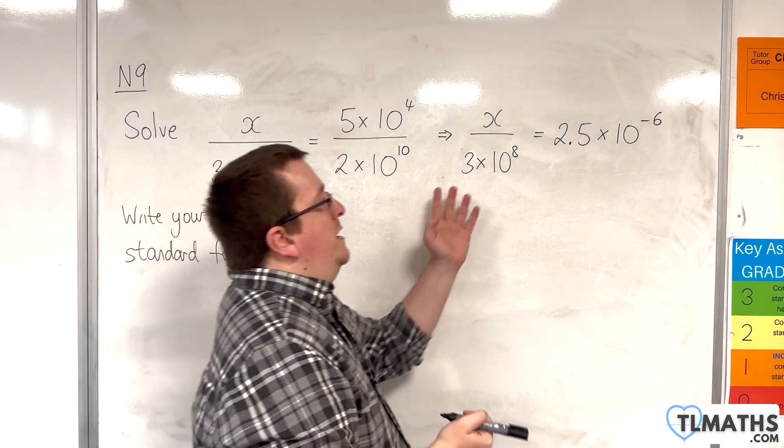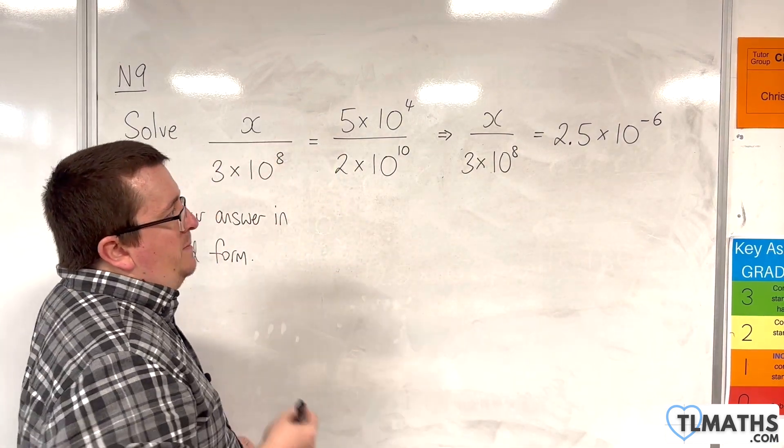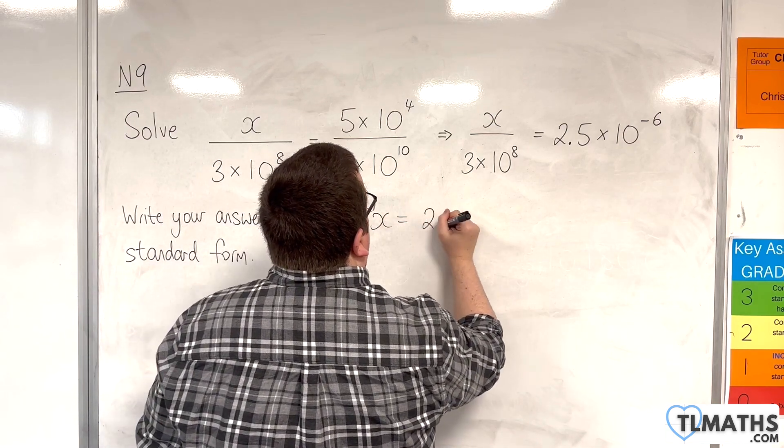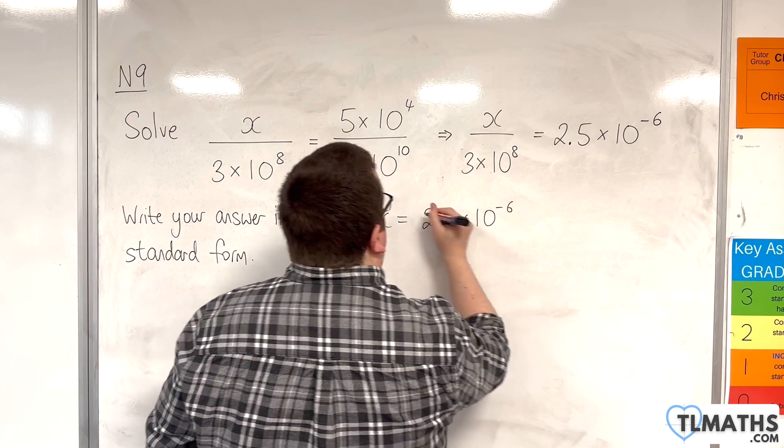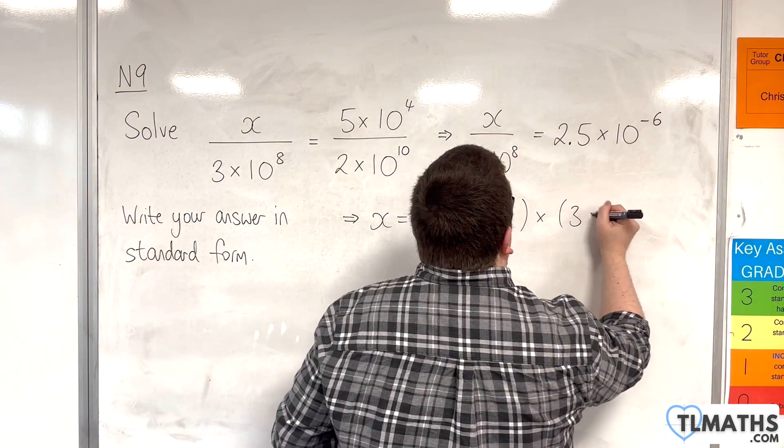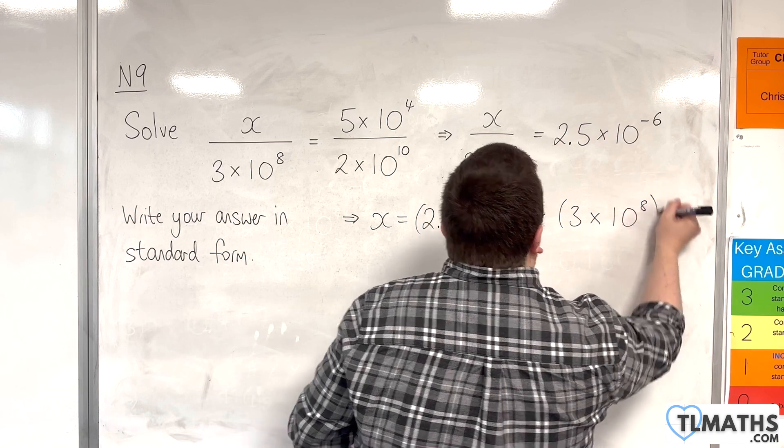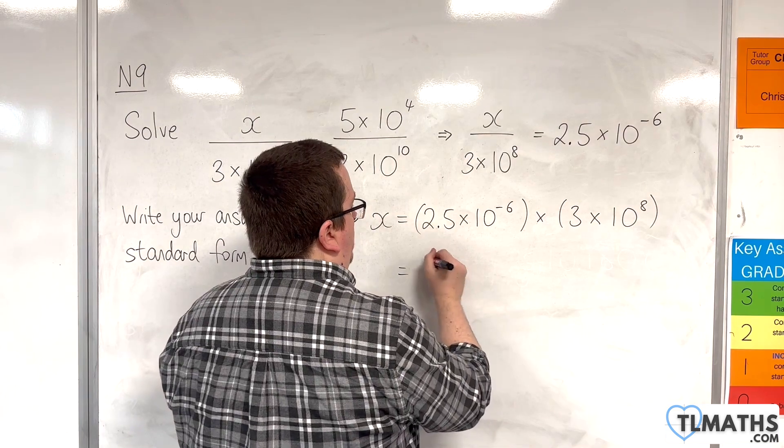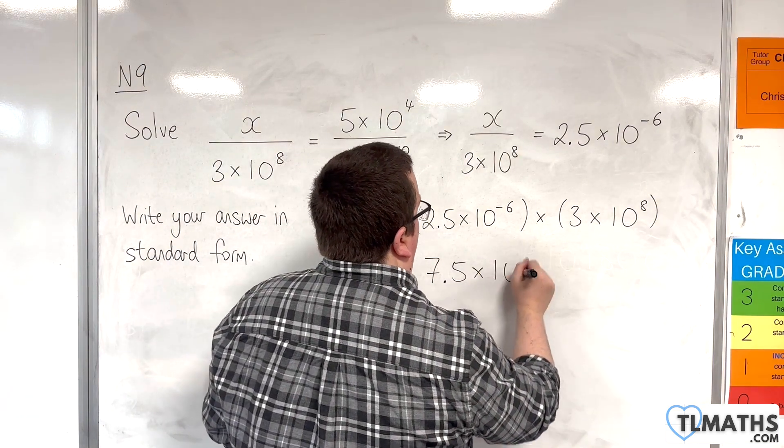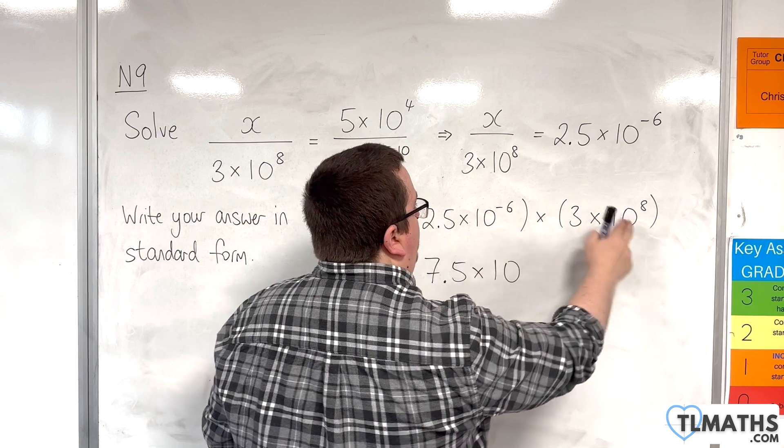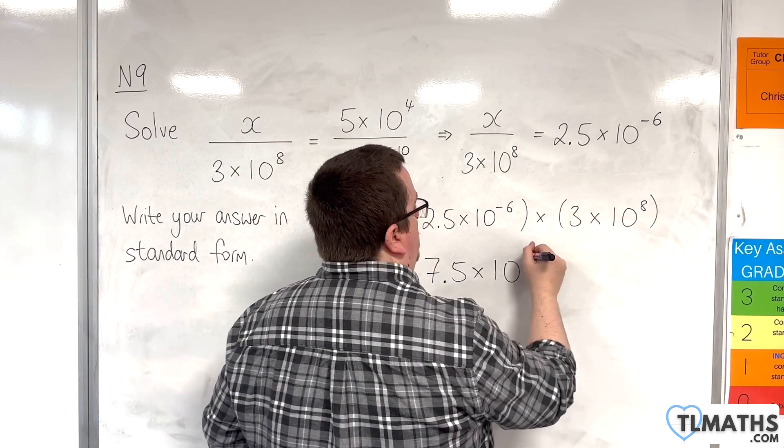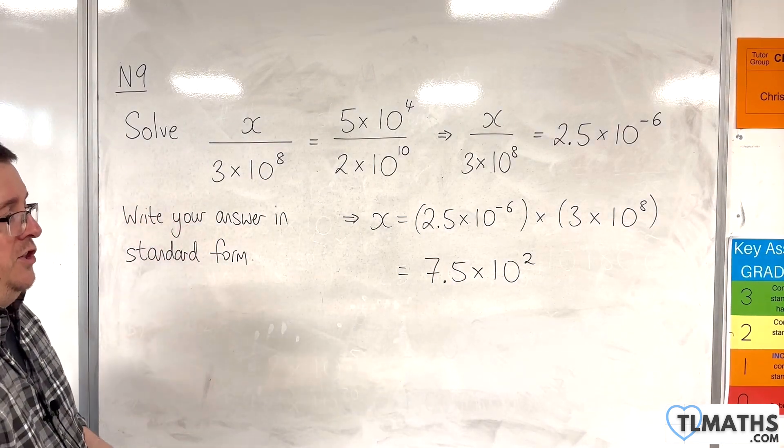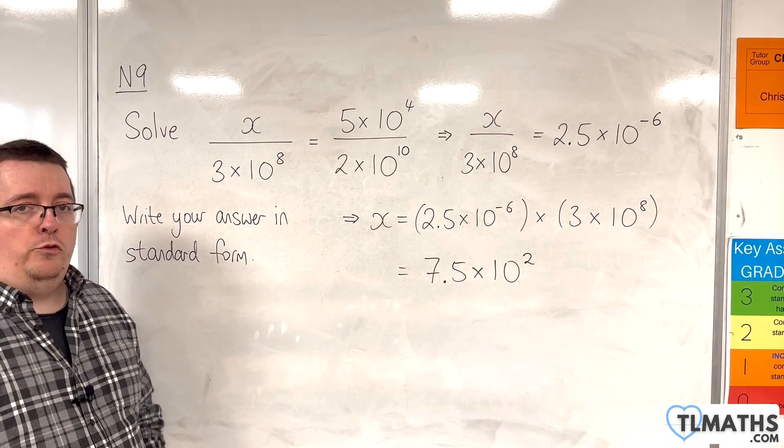So now we can multiply both sides by the 3 times 10 to the 8. So x is 2.5 times 10 to the minus 6 times by 3 times 10 to the 8. Now 2.5 times 3 is 7.5. And then we have 10 to the minus 6 times 10 to the 8, minus 6 plus 8 is 2. So our answer is 7.5 times 10 to the 2, and that is in the standard form as required.